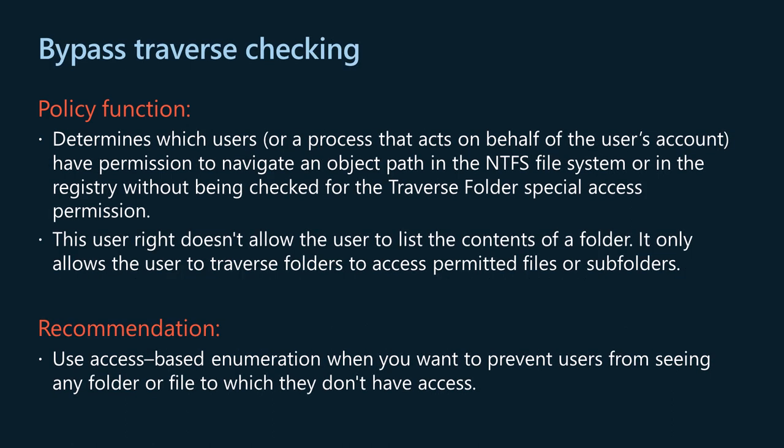The bypass traverse checking policy determines which users or a process acting on behalf of the user's account have permission to navigate an object path in the NTFS file system or registry without being checked for the traverse folder special access permission. This user right doesn't allow the user to list the contents of a folder — it only allows traversal to access permitted files or subfolders. Domain controller effective defaults grant this right to administrators, authenticated users, everyone, local service, network service, and pre-Windows 2000 compatible access. Member server defaults additionally include backup operators and users. Use access-based enumeration when you want to prevent users from seeing folders or files they don't have access to. Use the default settings of this policy in most cases, and if you change the settings, verify your intent through testing.